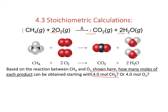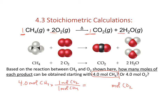Let's do the calculations for four moles of methane. Dimensional analysis helps because I'm starting with moles of methane and want moles of carbon dioxide. From the balanced equation, for every one mole of methane I put in, I produce one mole of carbon dioxide. Moles of methane cancel out, and if I put four moles of methane in, I should expect to produce four moles of carbon dioxide.